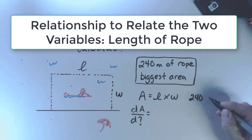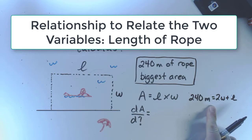240 meters is equal to 2W plus L. And so this is my relationship that relates the two variables together.